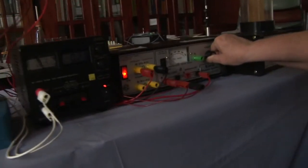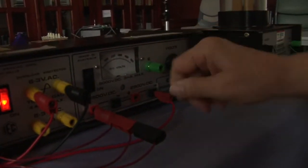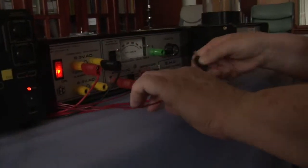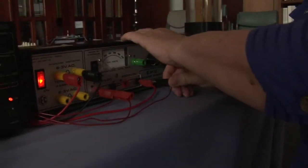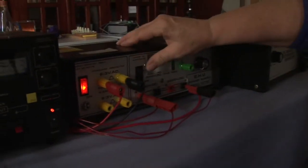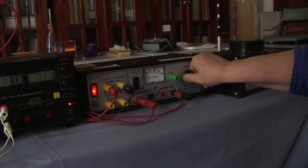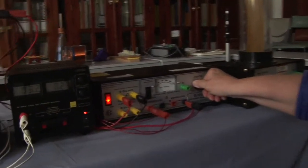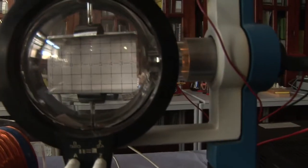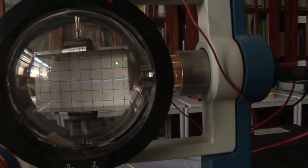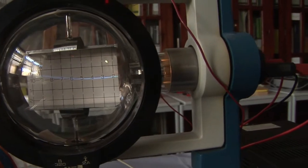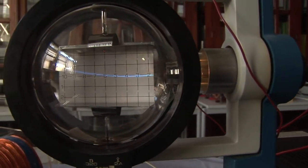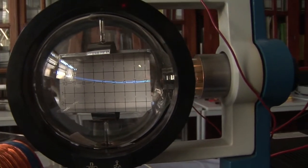And all I'll do is I'll just swap over one lead so that I'm now putting an electrostatic field between the two plates. We'll turn it back up again. Where we had a curve before, you can now see that we've sort of straightened out the field.